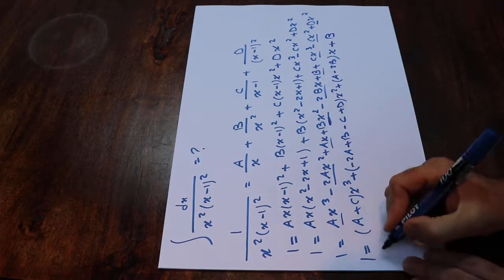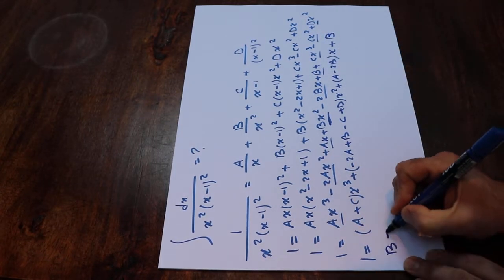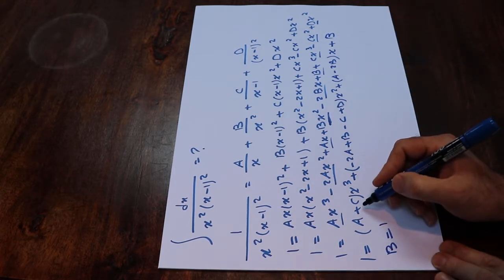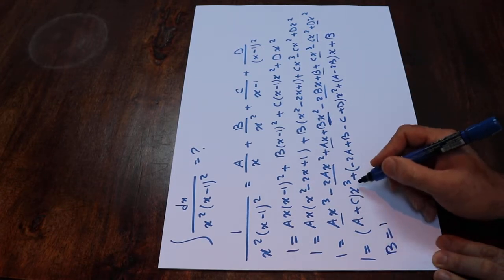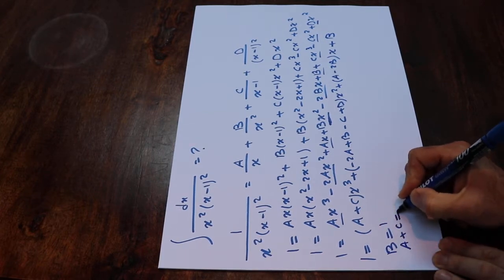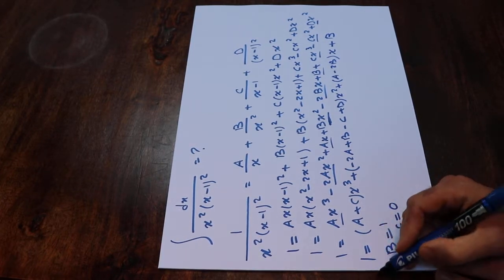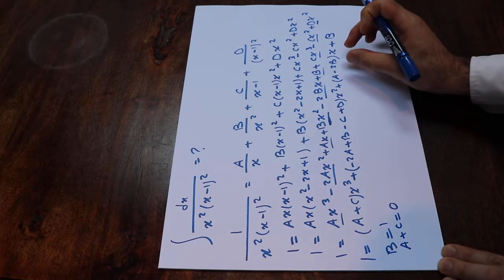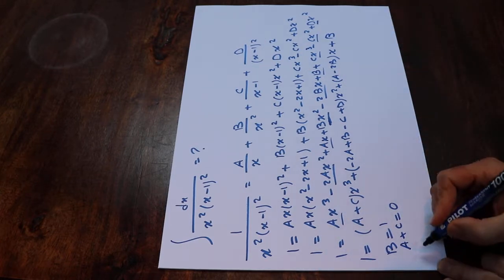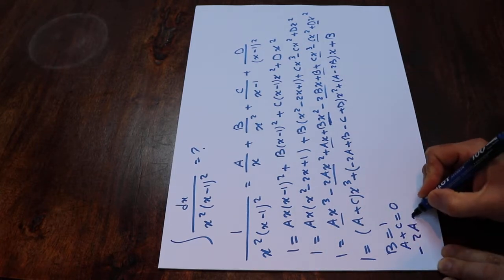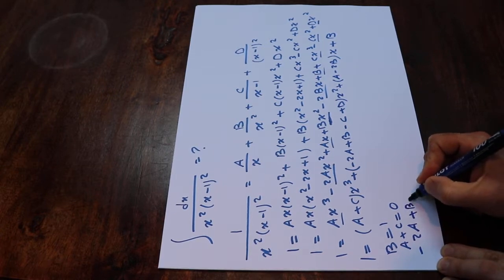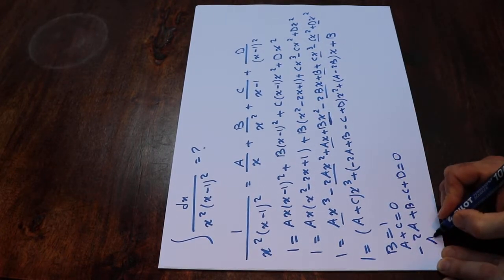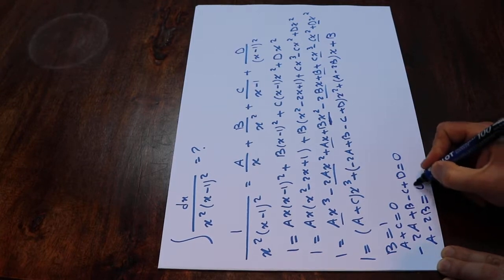So therefore B will be equal to 1 (the constant term equals 1). The coefficient of x³ equals 0 because there is no x³ on the left side. Also the coefficient of x² equals 0, so minus 2A plus B minus C plus D equals 0, and A minus 2B equals 0.